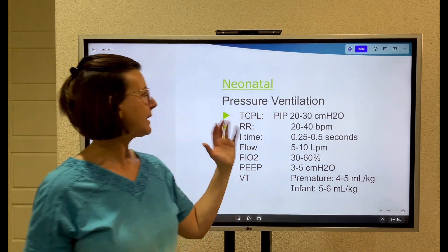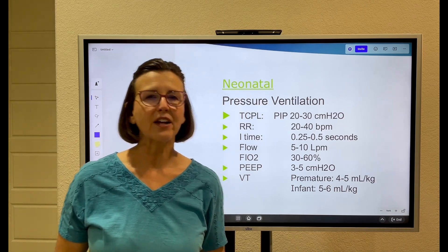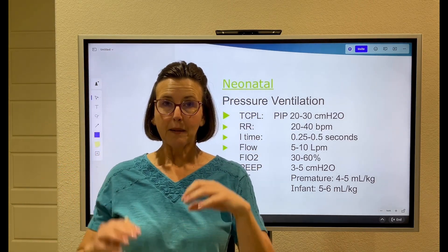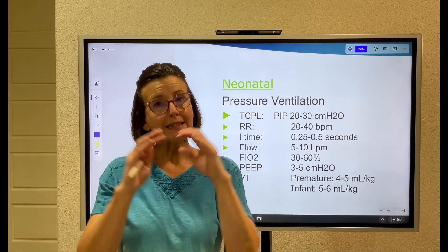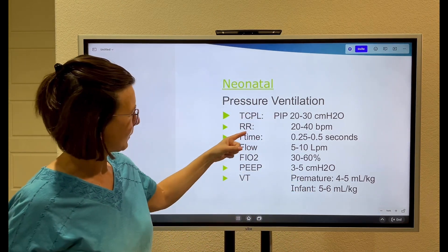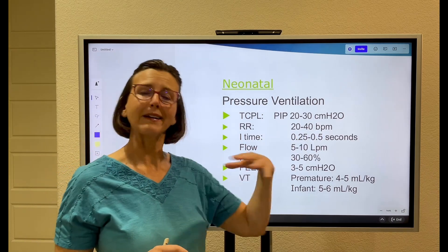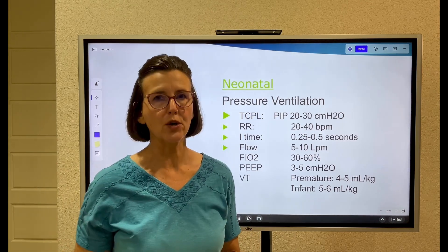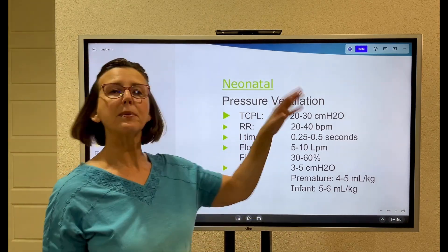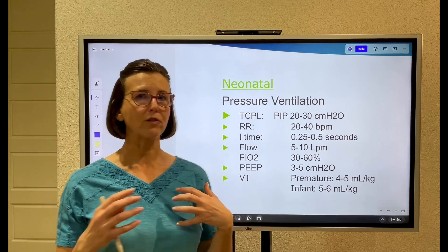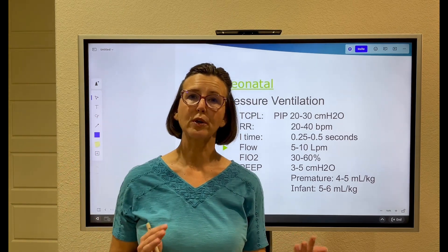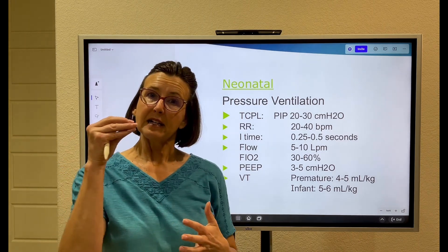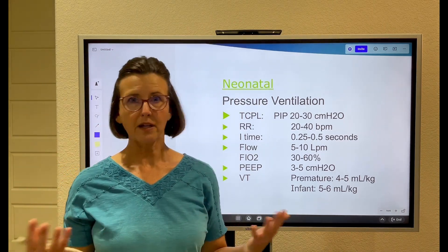For PIP, you need 20 to 30 — and here's a mnemonic: '20-20,' PIPs in the 20s, rates in the 20s. Now, for a term infant I'd like the rate in the 20s, but for a preterm infant we can go up to 40. So for a neonate, whether term or preterm, respiratory rate is about 20 to 40.